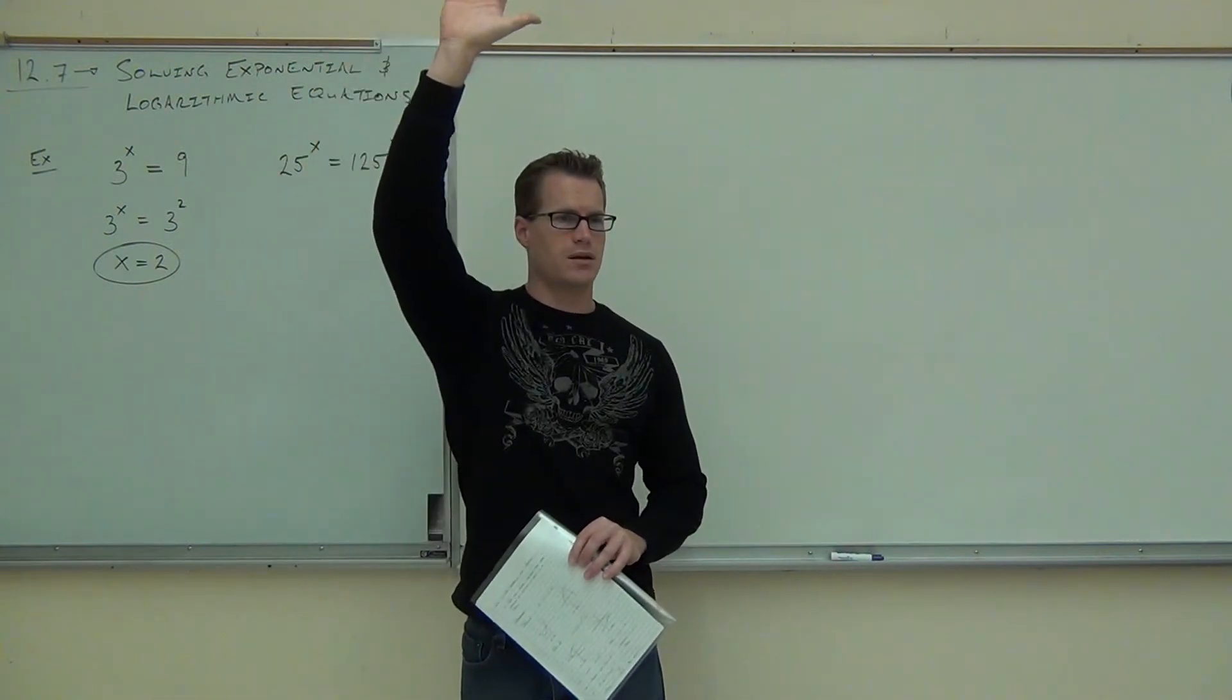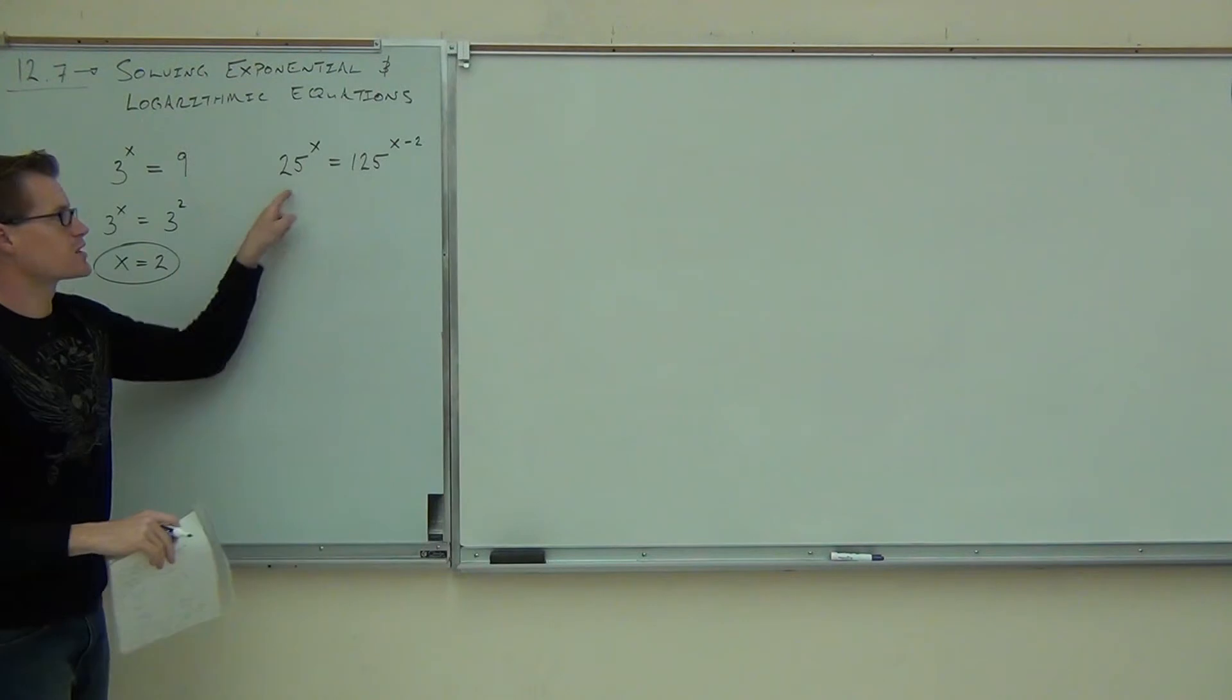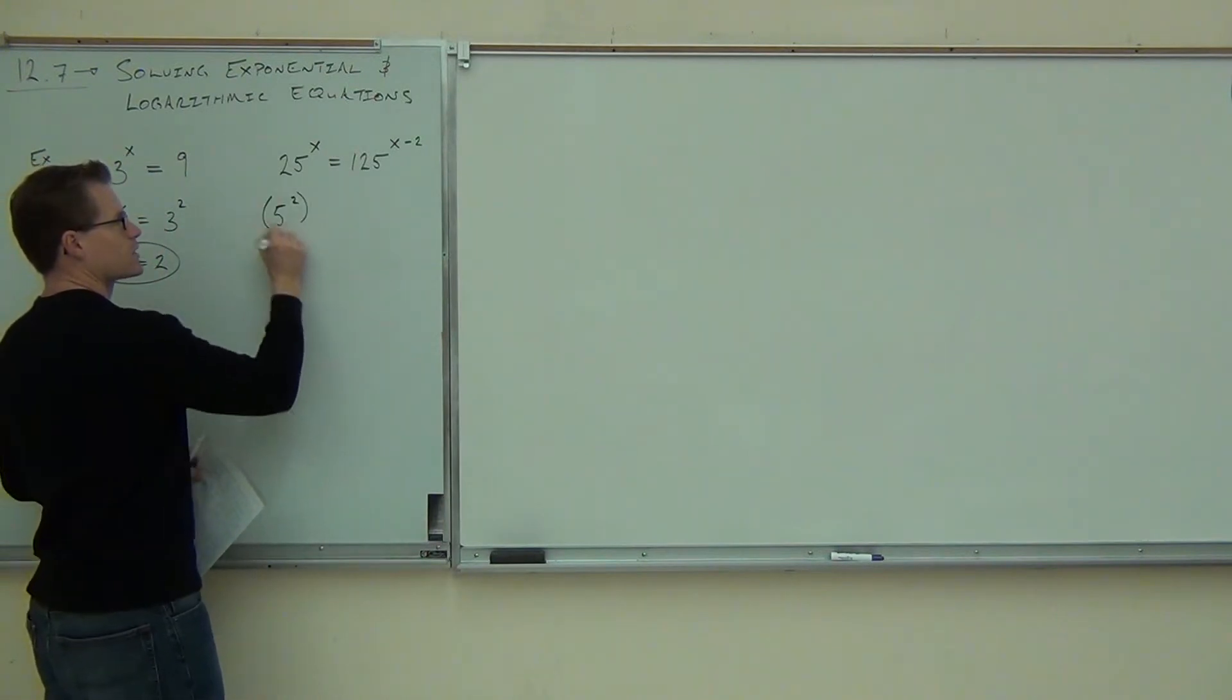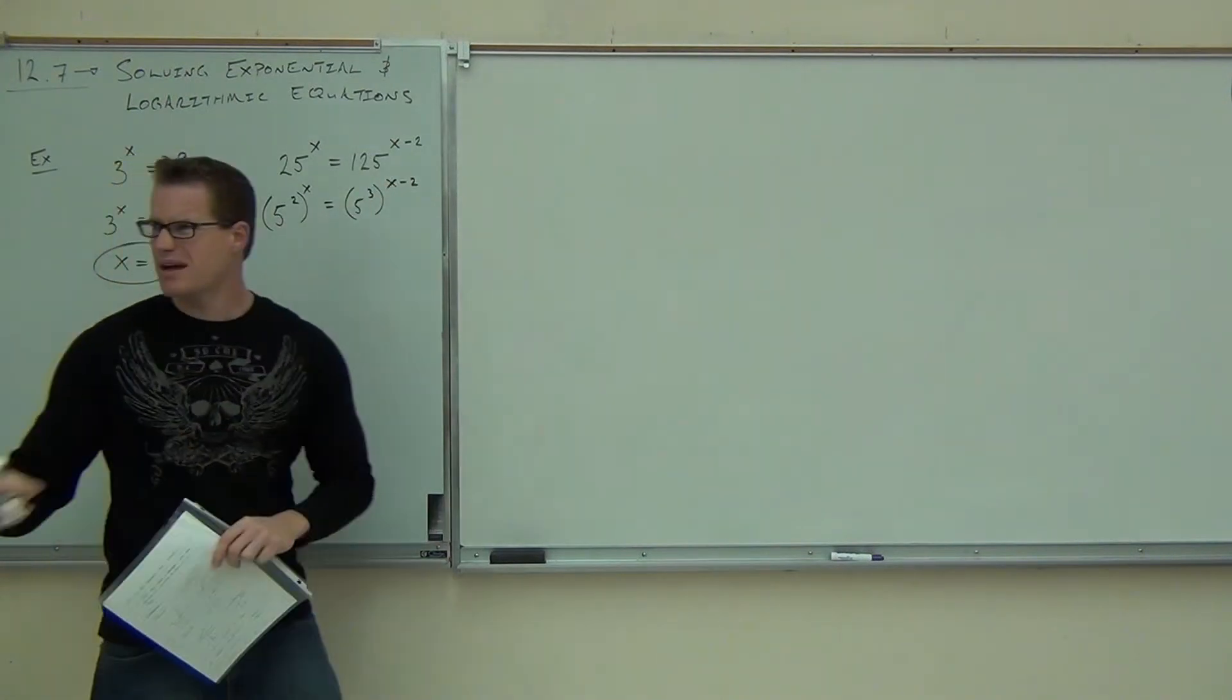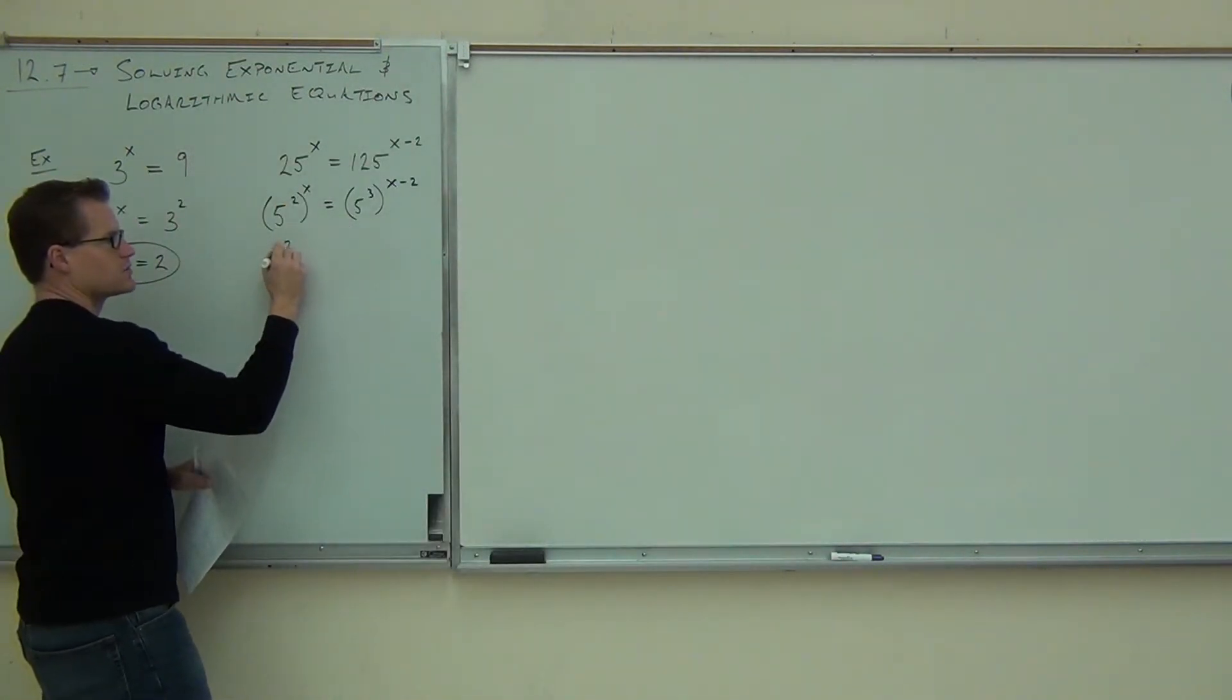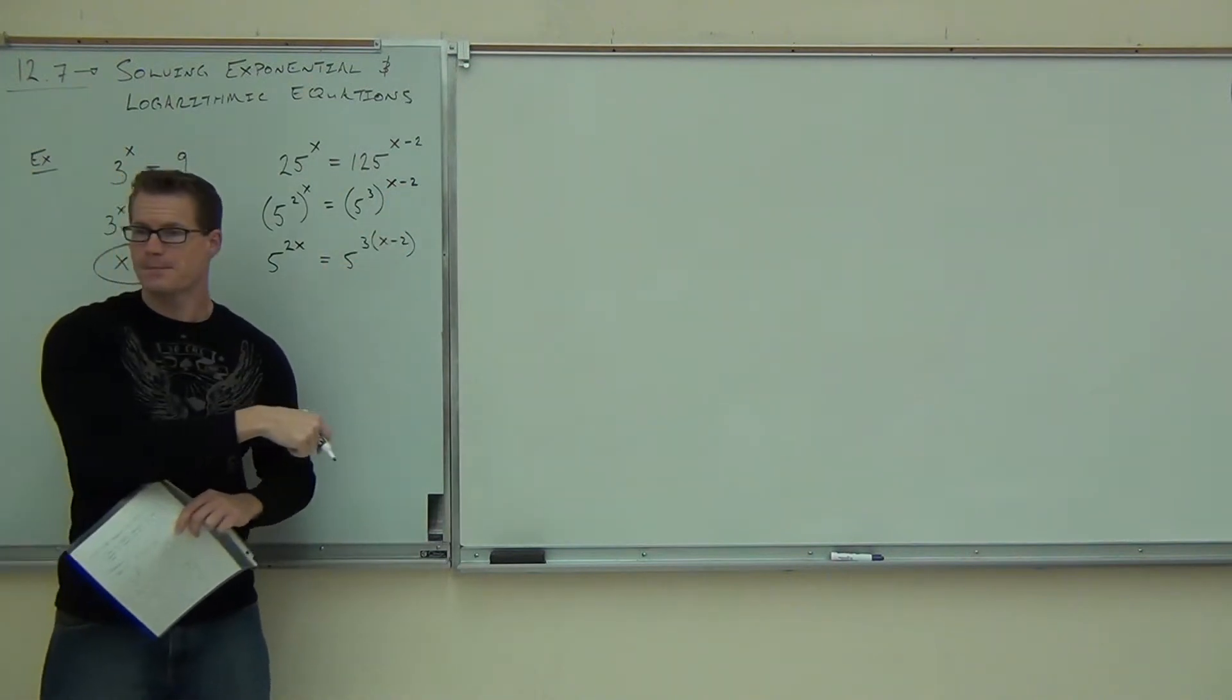Make sure you feel okay with that. That's really old stuff, but that's going to be on your test, so you need to know that. The first thing you look for is can you find common bases. Could you find common bases here? You would write 5 squared to the x, 5 to the third to the x minus 2. Of course, when you have exponents raised to exponents, you would get 5 to the 2 times x, and you would get 5 to the 3 times x minus 2. Notice how the x minus 2 is in parentheses because you're going to have to distribute that.